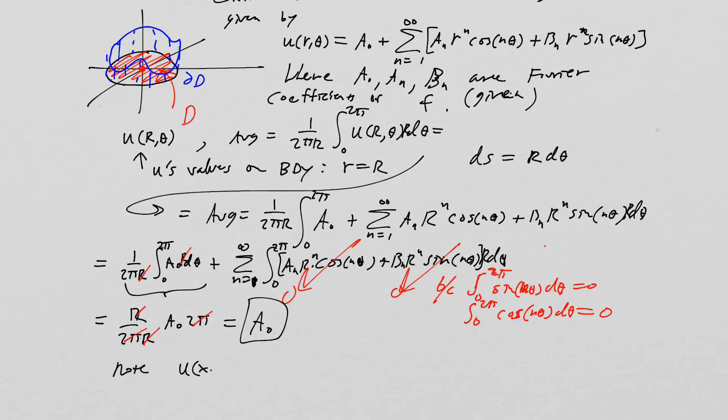So that's the value. But note, our value is a₀. But note if I take u(x₀, y₀), we know that's going to be equal to u at r equals zero, θ, which is going to be equal to a₀. So this is actually the value at the center of the disk.